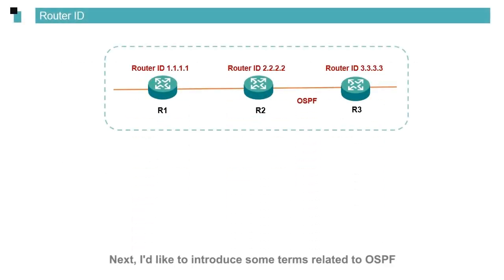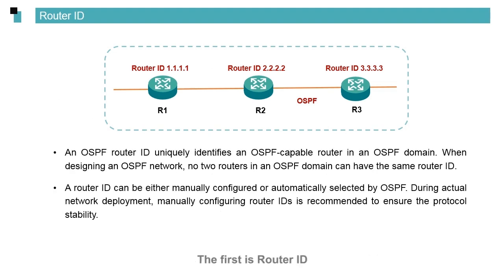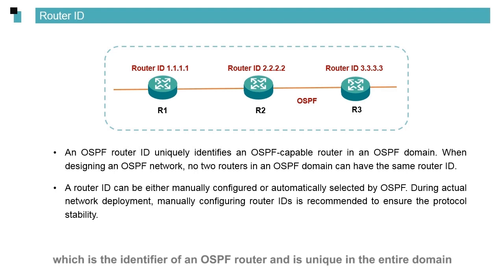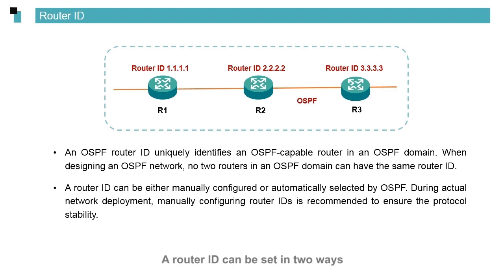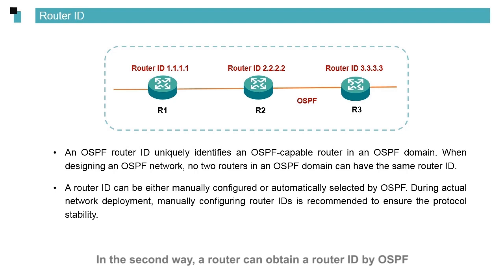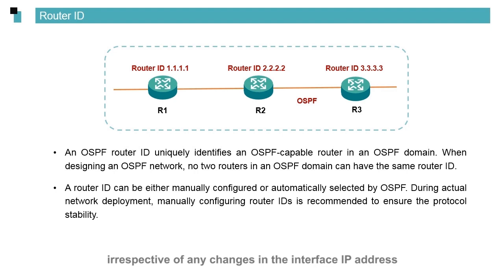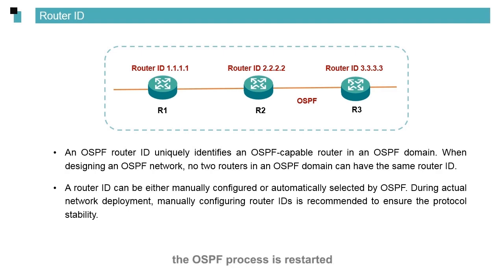Next, I'd like to introduce some terms related to OSPF. The first is router ID, which is the identifier of an OSPF router and is unique in the entire domain. A router ID is in the same format as an IP address and can be set in two ways: manually configuring the router ID, or having the router obtain a router ID through OSPF. A router ID is not preempted — after an OSPF process is started, irrespective of any changes in the interface IP address, the router ID will not change unless it is manually modified and the OSPF process is restarted.